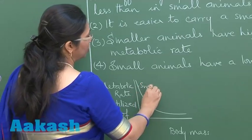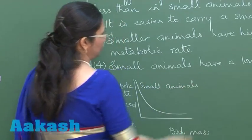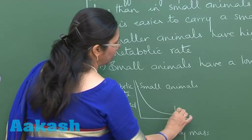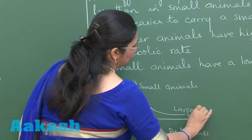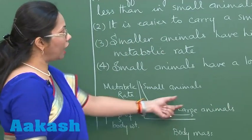larger body mass but lesser metabolic rate. So our best choice is option 3.